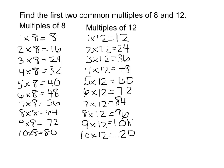So my multiples of 8 are 8, 16, 24, 32, 40, 48, 56, 64, 72, and 80. So those are my first 10 multiples of 8.